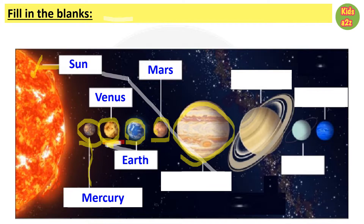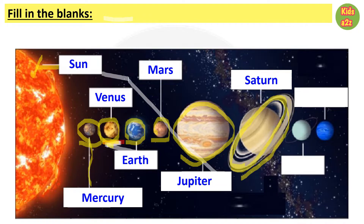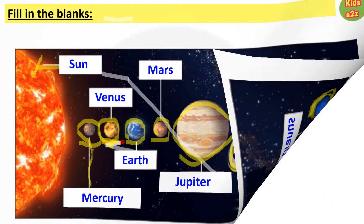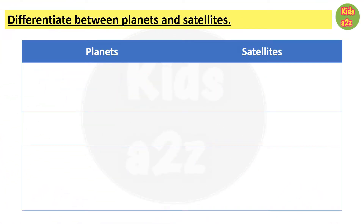The third one is our very own Earth. The fourth one is the red planet, that is Mars. This is the biggest planet, that is Jupiter. This one is the second largest planet and also with beautiful rings, that means this is Saturn. After that it is Uranus, and the last one, another blue planet and also farthest from the Sun, is Neptune.